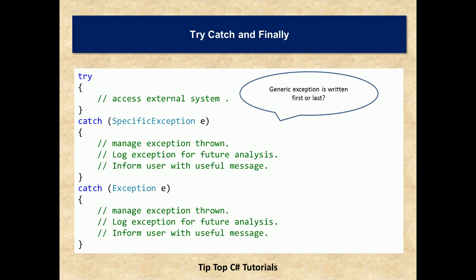Some more important points to remember: once an exception occurs in a try block, the flow of control jumps to the first associated exception handler present anywhere in the call stack. In C#, the catch keyword is used to define an exception handler. Do not catch an exception unless you know how to handle it — otherwise you will be leaving the application in a devastated state. A catch block with a variable e will have more information about the exception, such as the call stack, exception string, or additional information.